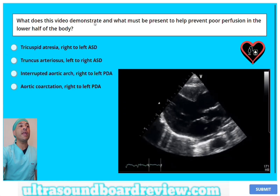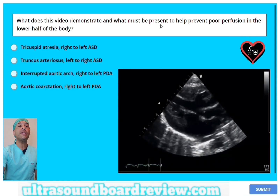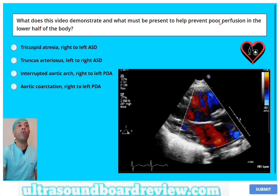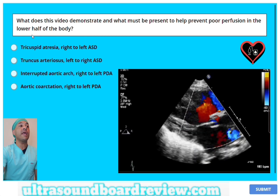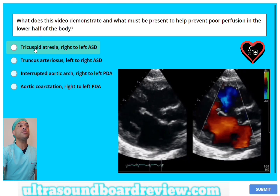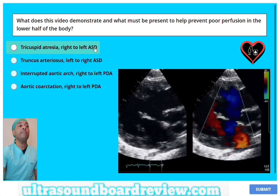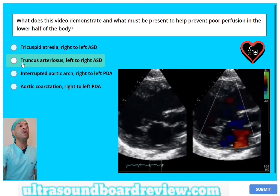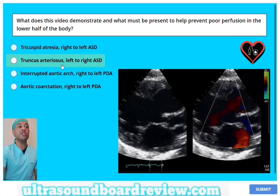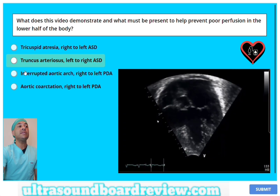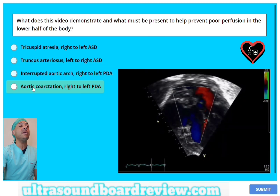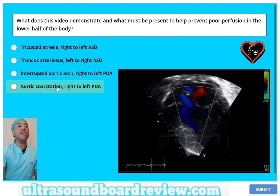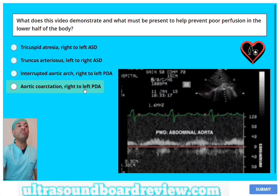What does this video demonstrate, and what must be present to help prevent poor perfusion in the lower half of the body? Is it A, tricuspid atresia and a right-to-left ASD? B, truncus arteriosus and a left-to-right ASD? C, interrupted aortic arch and a right-to-left PDA? Or is it D, aortic coarctation and a right-to-left PDA?